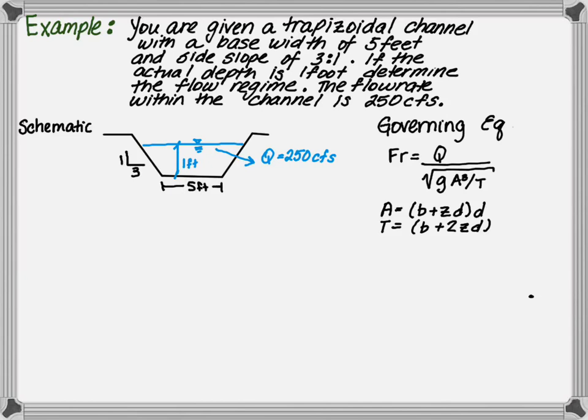For a trapezoidal channel, the area is equal to the depth of flow times the quantity of the base width plus the side slopes times the flow depth. The top width is equal to the base width plus 2 times the side slopes times the depth of flow.